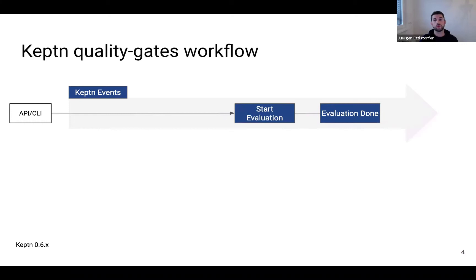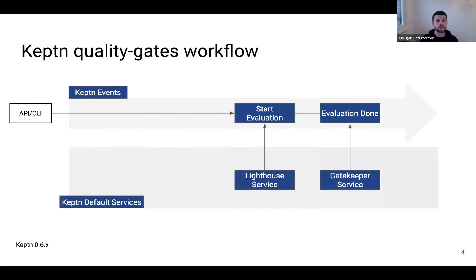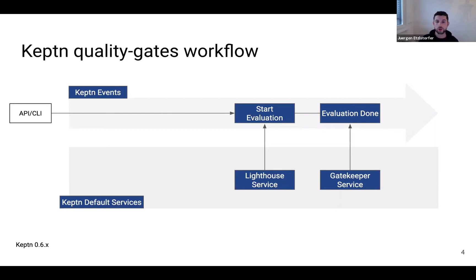There are other workflows possible. For example, if you only have the Keptn quality gates workflow, you start with an evaluation and don't do the deployment or testing within Keptn — this might be done outside. You can only start the evaluation workflow, the Lighthouse service will do its work, send back the evaluation done event, and the Gatekeeper service can then promote it or not. Here you have the possibility to use only a part of Keptn and not the complete full-blown version.